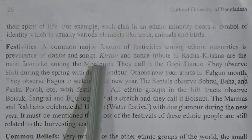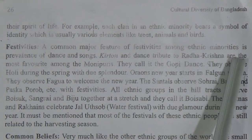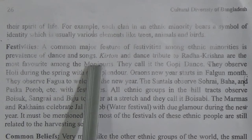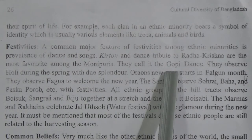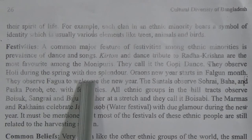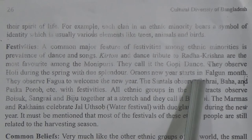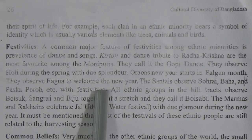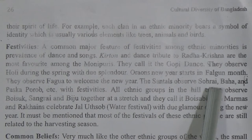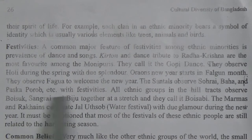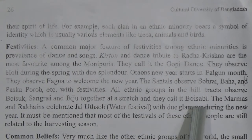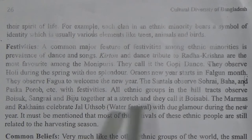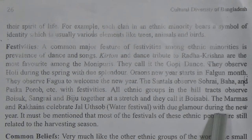Next, Festivals: A common major feature of festivities among ethnic minorities is the prevalence of dance and songs. Kirtan and dance tributes to Radha Krishna are the most popular among the Manipuris — they call it the gopi dance. They observe Holi during the spring with due splendor. The Oraons' New Year occurs in Falgunman; they observe Fagua to welcome the New Year. The Shautas observe Shoharai, Baha, and Pascha Poro with festivities. All ethnic groups in the Hill Tracts observe Boishag, Sangrai, and Biju together, and they call it Boishabi. The Marmas and Rakhines celebrate Jol Utshob — the Water Festival — with great glamour during the New Year.